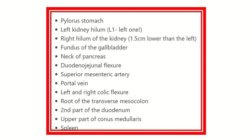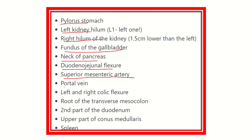Here we can see the different structures located at the level of the transpyloric plane. First, the pylorus of the stomach; the hilum of the left kidney and also the right kidney — the upper part of the left kidney hilum and the lower part of the right kidney hilum. Then the fundus of the gallbladder, the neck of the pancreas, the duodenojejunal junction, and the superior mesenteric artery.